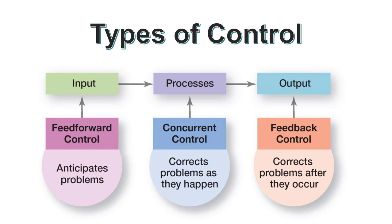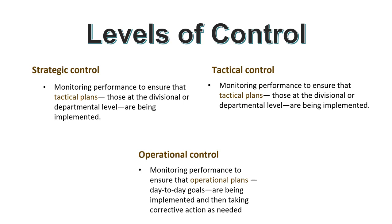Concurrent control entails collecting performance information in real time, enabling managers to determine if employee behavior and organizational processes conform to regulations and standards. Corrective actions can be taken immediately when performance is not meeting expectations. Feedback control involves collecting performance information after a task or project has been completed, then using that information to correct or improve future performance. This form of control is extensively used by both supervisors and managers at different levels.